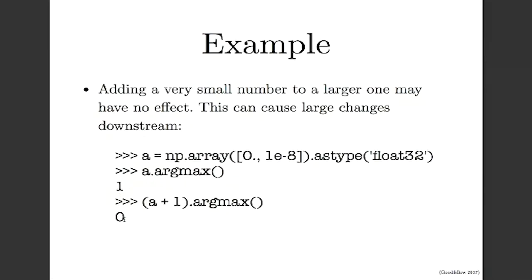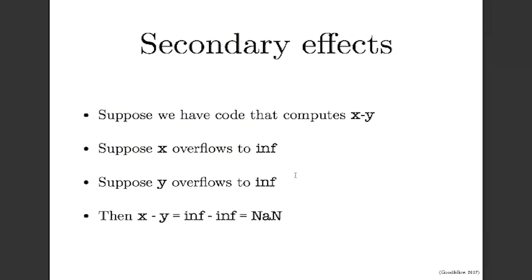There are secondary effects when rounding, overflow, and underflow errors compound. For example, if x overflows to inf and y overflows to inf, then x − y gives inf − inf, which is undefined — and those infs become NaNs. A lot of the time when you have overflow, the first sign is a NaN in your loss function or gradient: somewhere in your computational graph you get an inf, and by the time it's printed out it's been turned into a NaN by subsequent arithmetic.